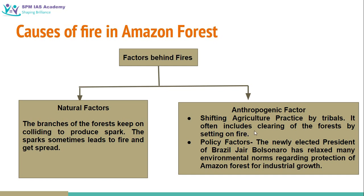Shifting agriculture often involves clearing of the forest by setting it on fire. The tribal people of this area clear the forest by setting fire to the trees, practice agriculture there, and when the fertility of that land is exhausted, they move to another area, clear that forest by fire, and practice agriculture there. This is called shifting agriculture. Sometimes this fire becomes uncontrolled and leads to a huge forest fire in the Amazon forest area.